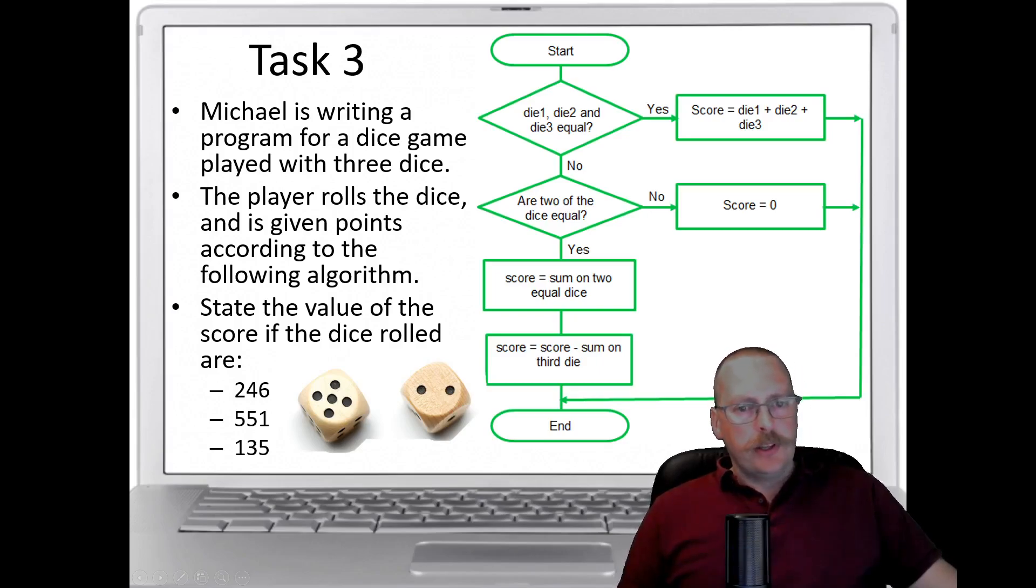Task 3. This looks at solving a flowchart flow diagram and here we have the instructions for a game. So this is what we need to do with our dice game. If the player rolls a dice and is given point and the points are then given according to what they roll on the dice depending on what the flow diagram is saying. So we need to look at the first one here which is 2, 4 and a 6. So they roll 3 dice. Die 1, die 2 and die 3. If they're all equal, 2, 4 and a 6 and none of them are equal. So it's a no. So we can ignore this bit of the flowchart.